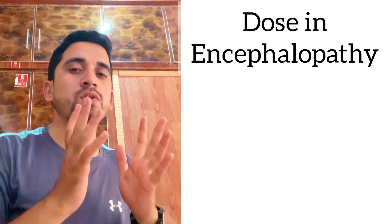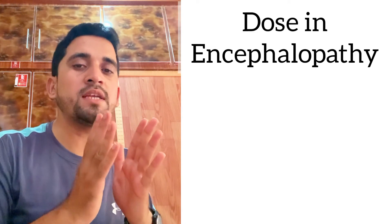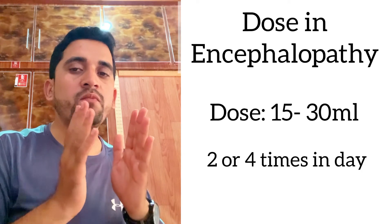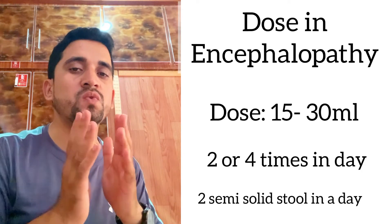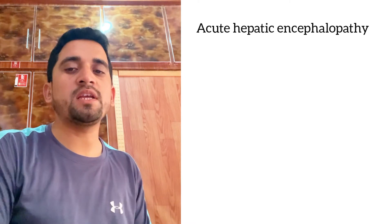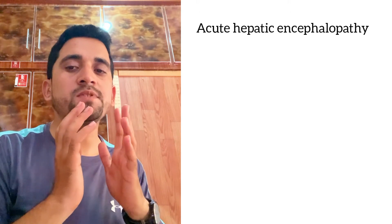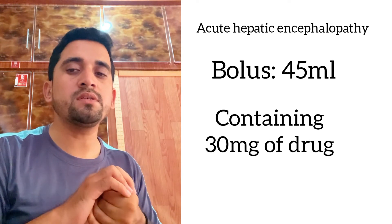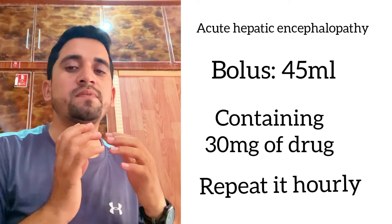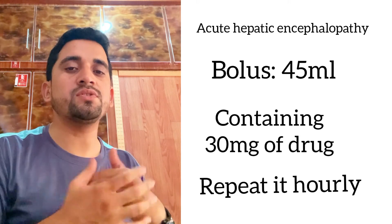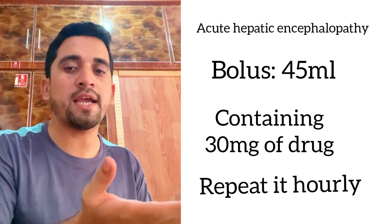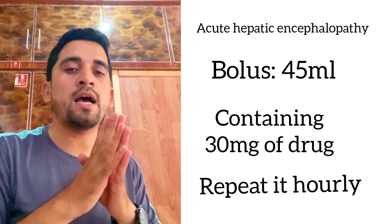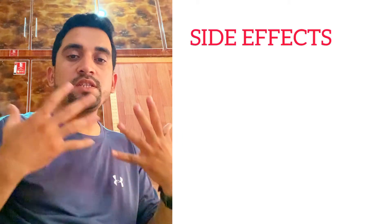In patients with hepatic encephalopathy, lactulose is typically given in a standard dose of 15 to 30 ml, two to four times a day, with the aim of achieving two semi-soft stools per day. For acute hepatic encephalopathy, the common option is to administer a bolus of 45 ml containing 30 g of drug and repeat it hourly until the first bowel movement. Once the episode has subsided, the dose can be titrated to achieve two to three soft bowel movements daily.